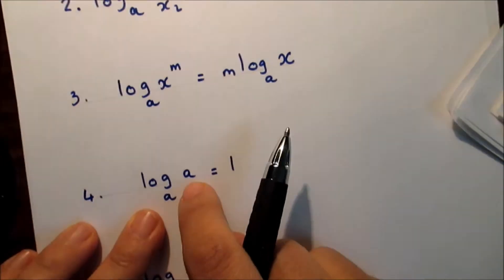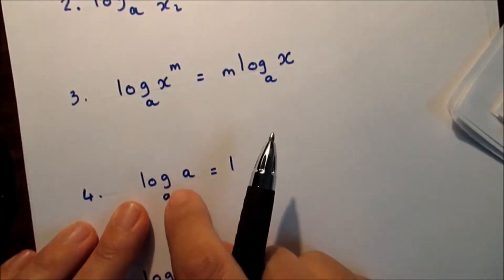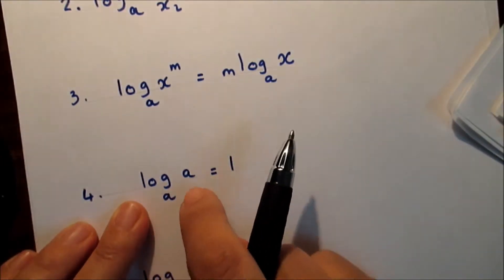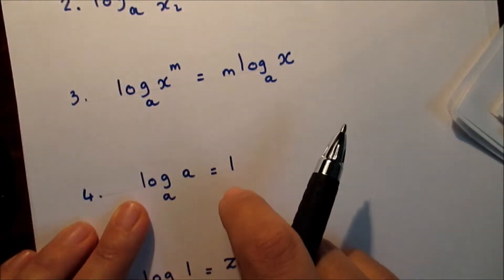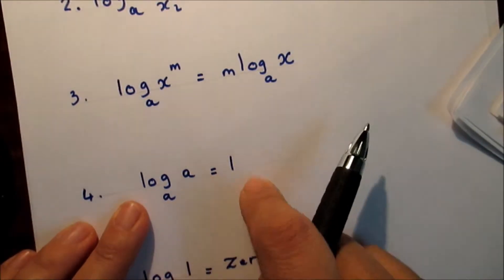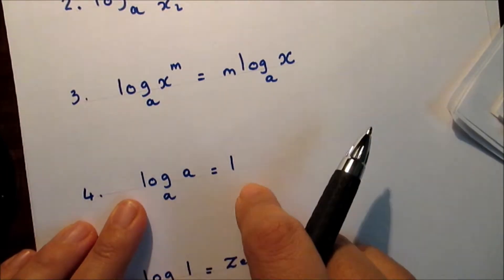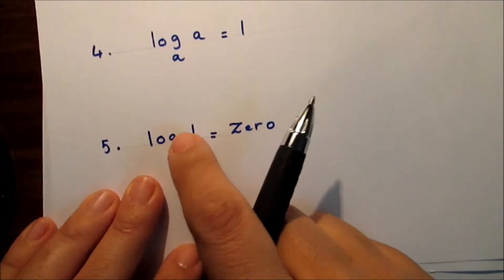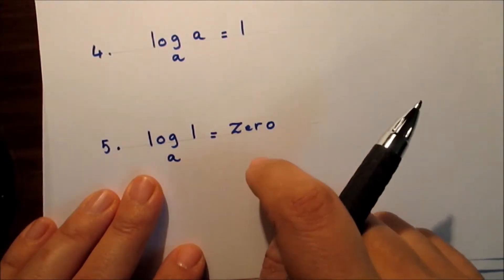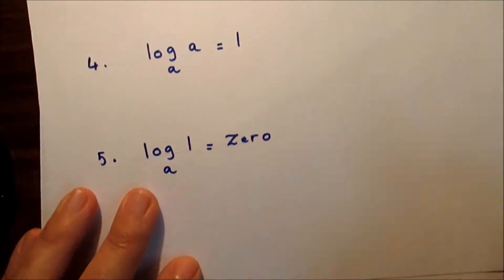The fourth law: the logarithm of a number to the same base is always one — log base a of a equals one. And the log of one to any base is always zero.